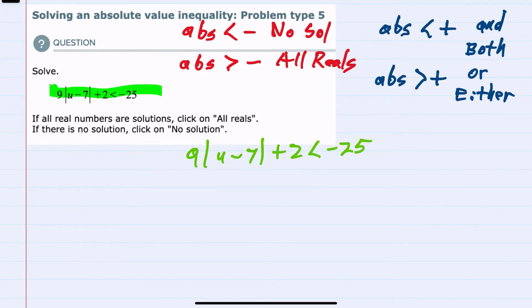So, for this example, we're not going to know which situation we have until we get the absolute value by itself. So to begin to do that, I'm first going to subtract the two over to the right-hand side. That would cancel on the left, leaving me with 9 times the absolute value of u minus 7 is less than negative 27.